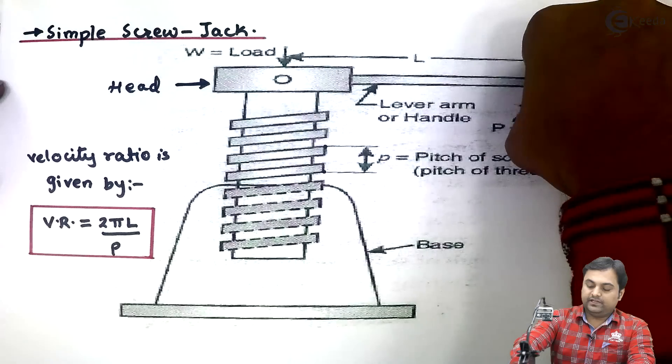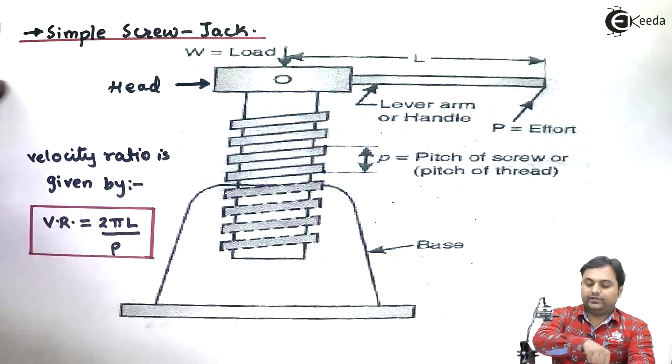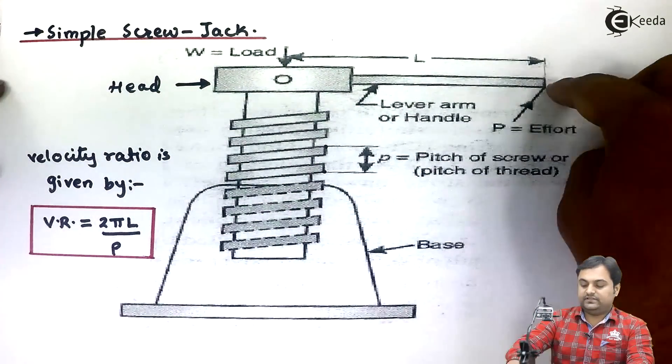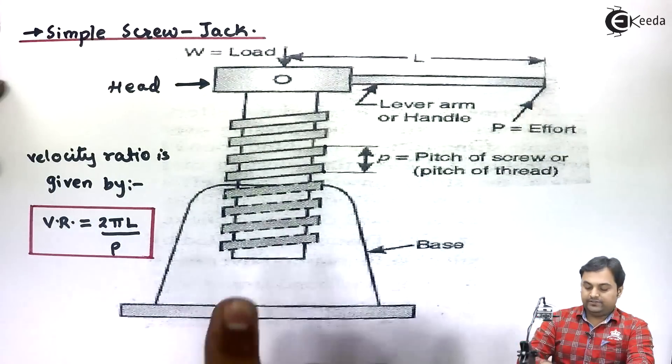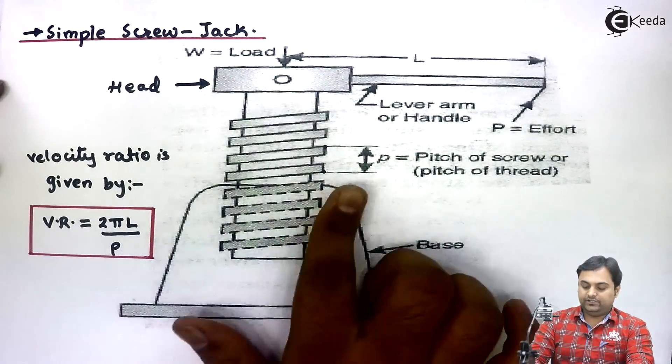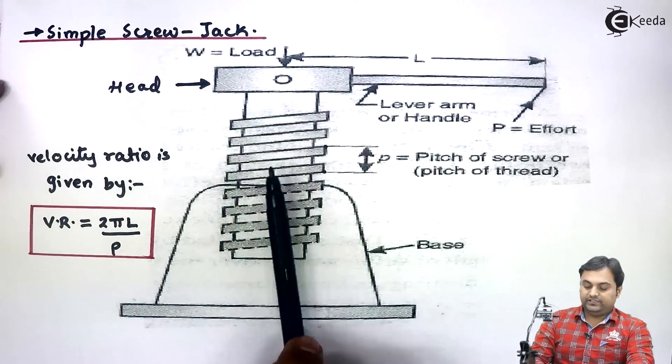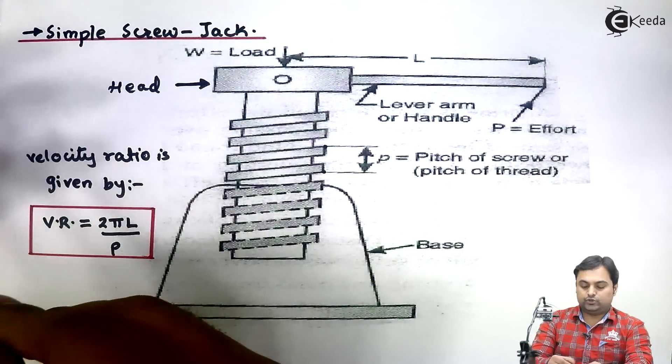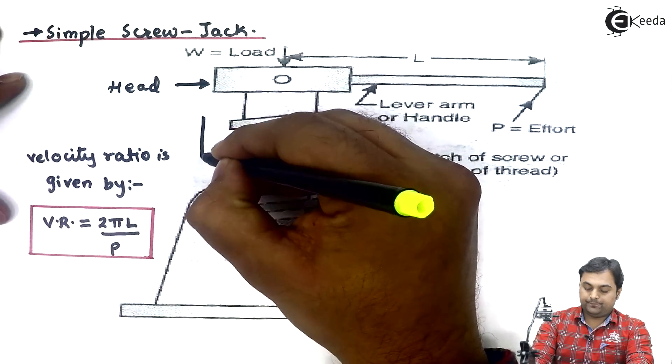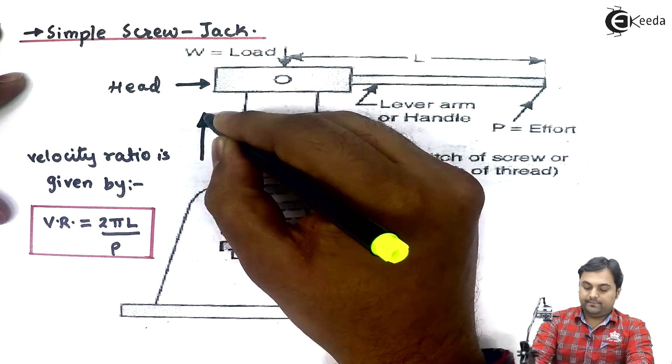Once the handle gets rotated, the screw will turn. When the screw rotates, it will also move up, and by moving up it lifts the load.